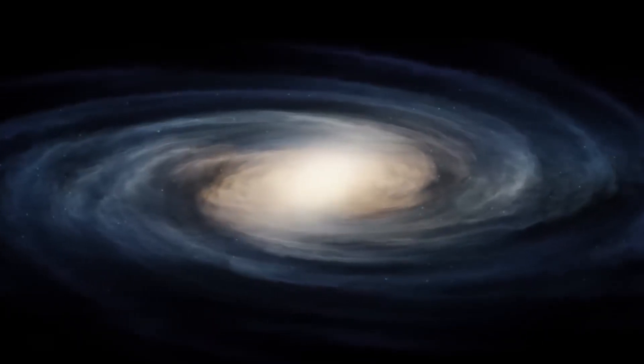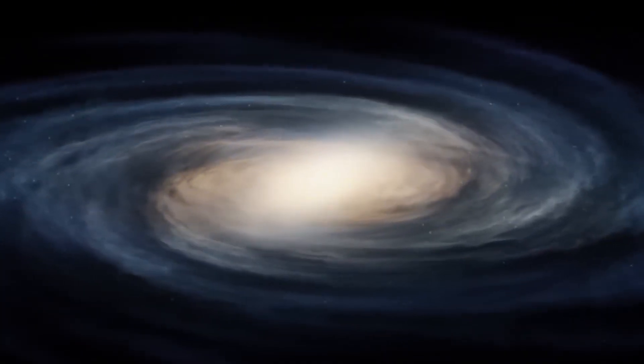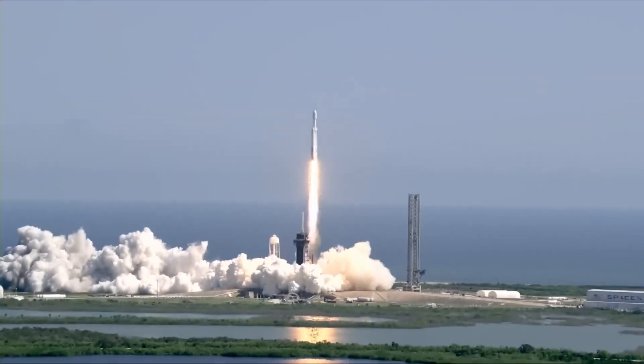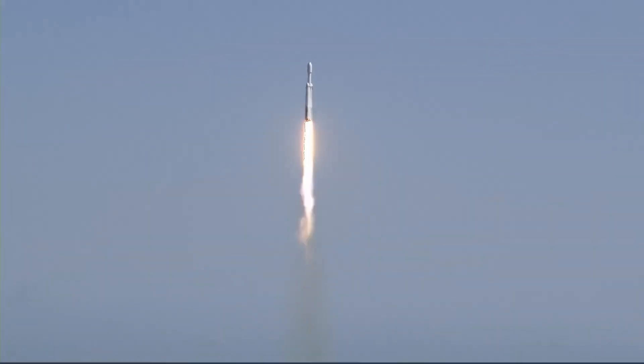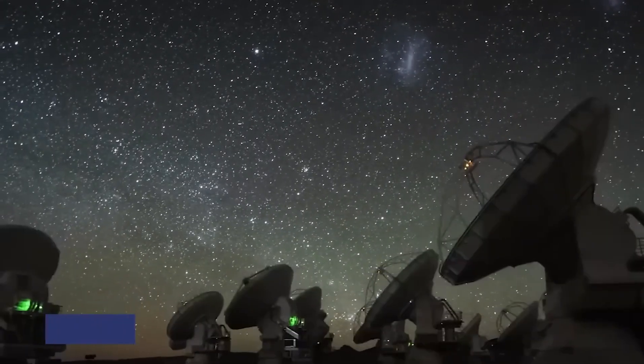The first exoplanets were found in the 1990s, and today there are more than 3,000 confirmed planets orbiting distant stars. However, only a dozen of them have been directly imaged.